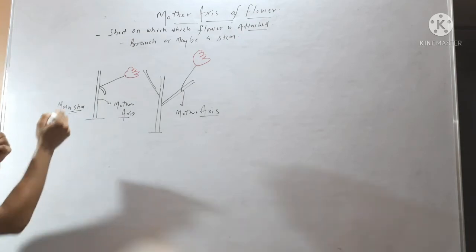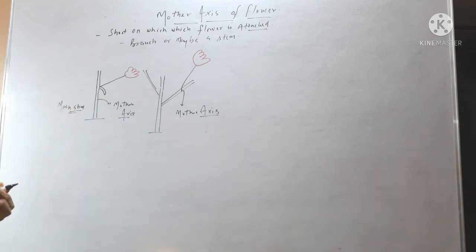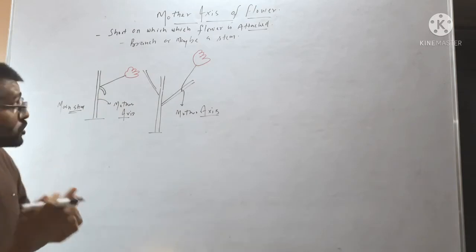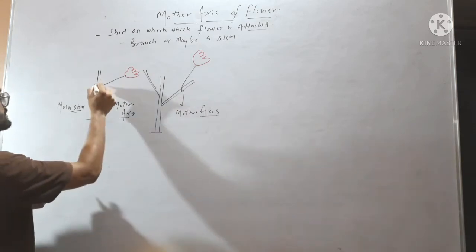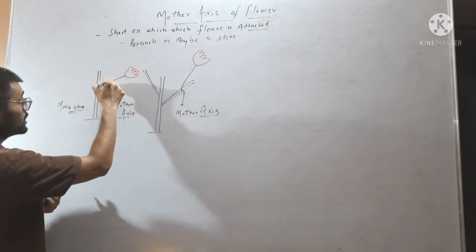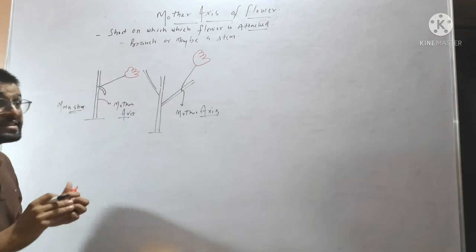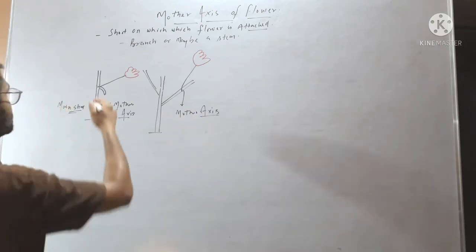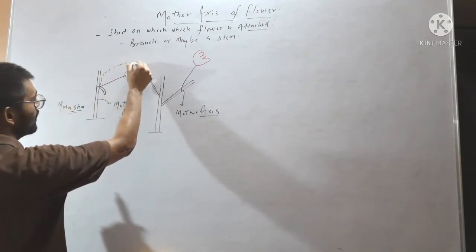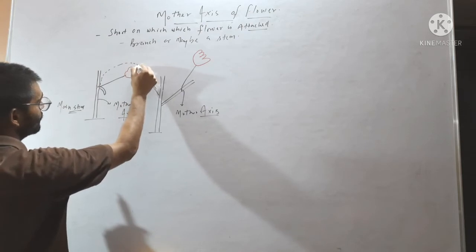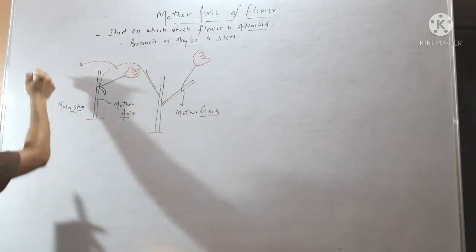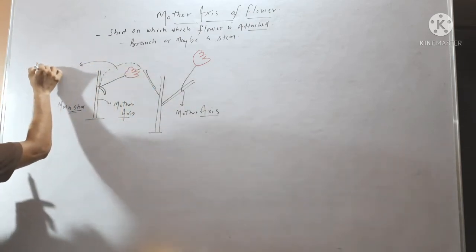The side facing towards the mother axis — the upper side of the mother axis — is called the posterior side of the flower.